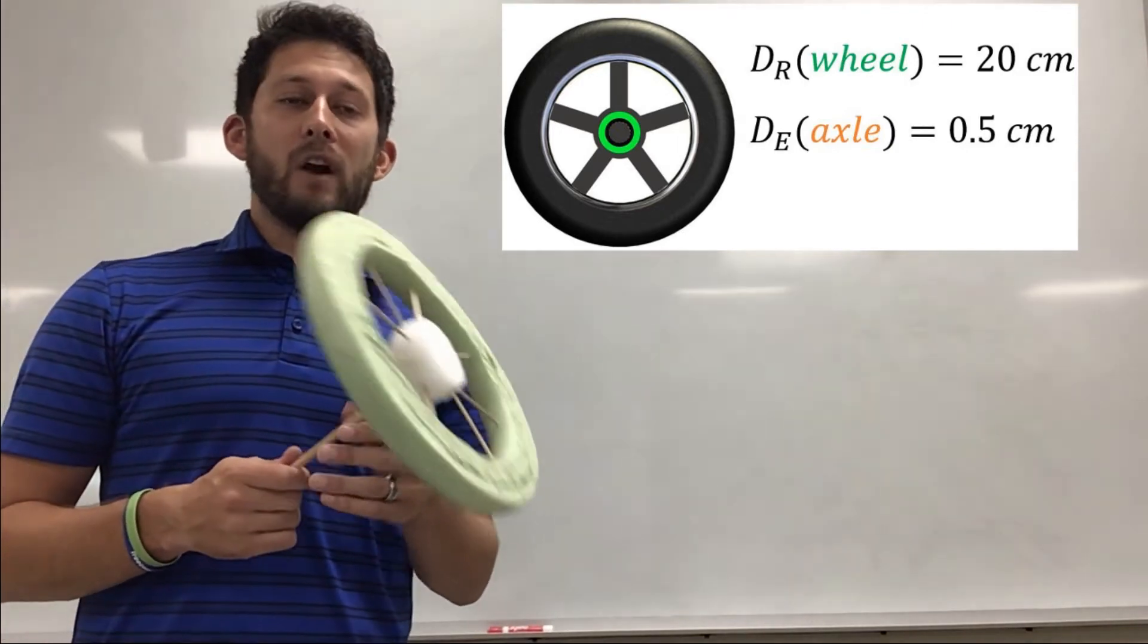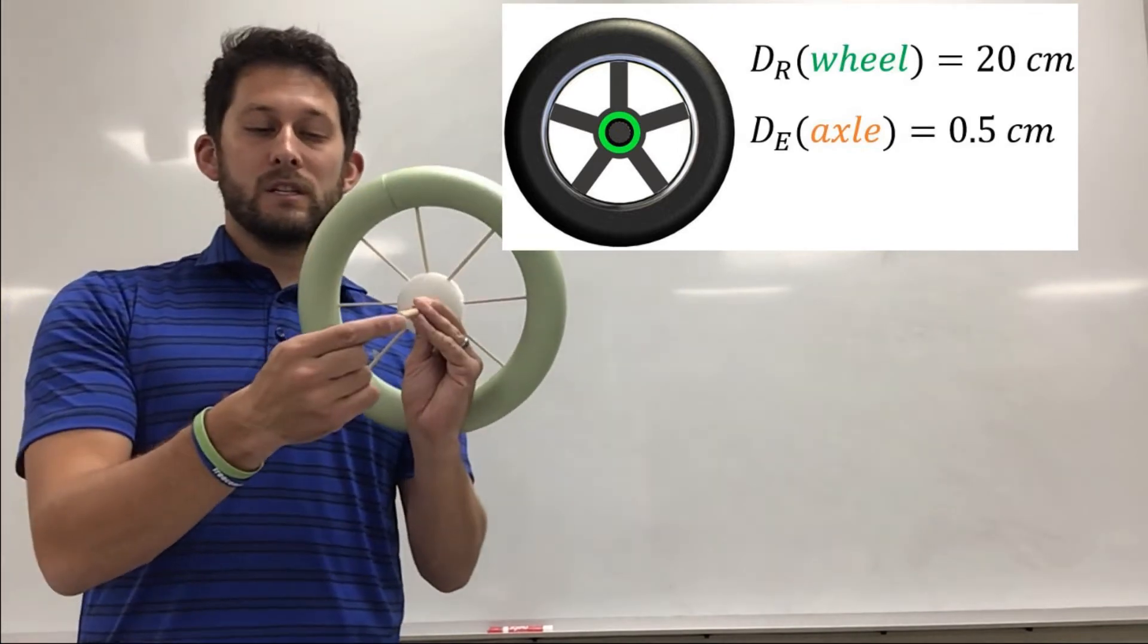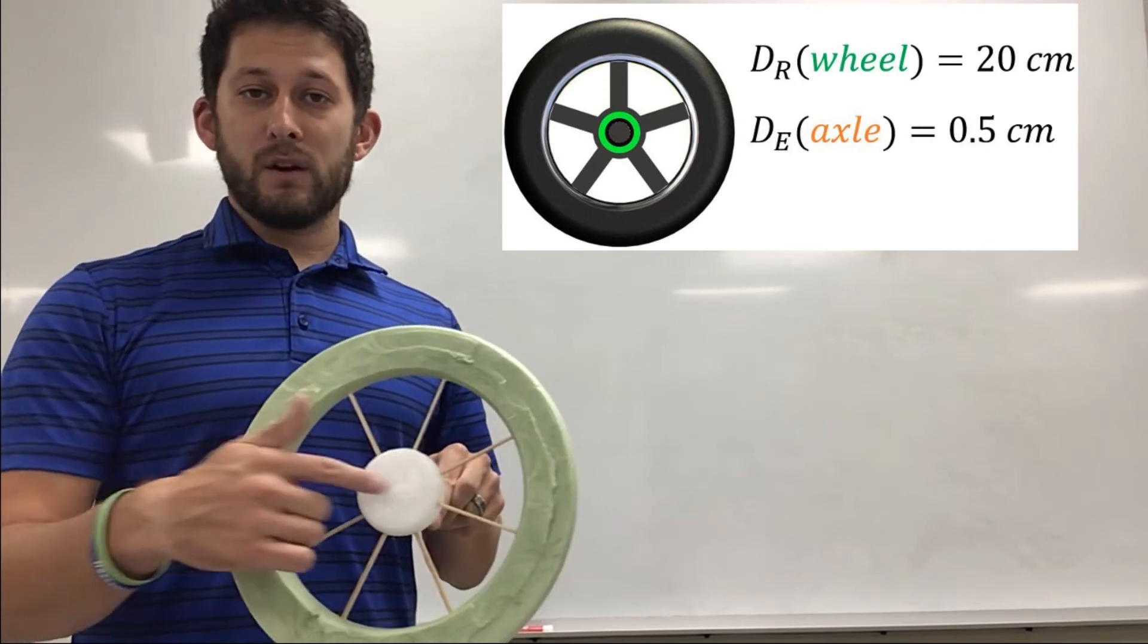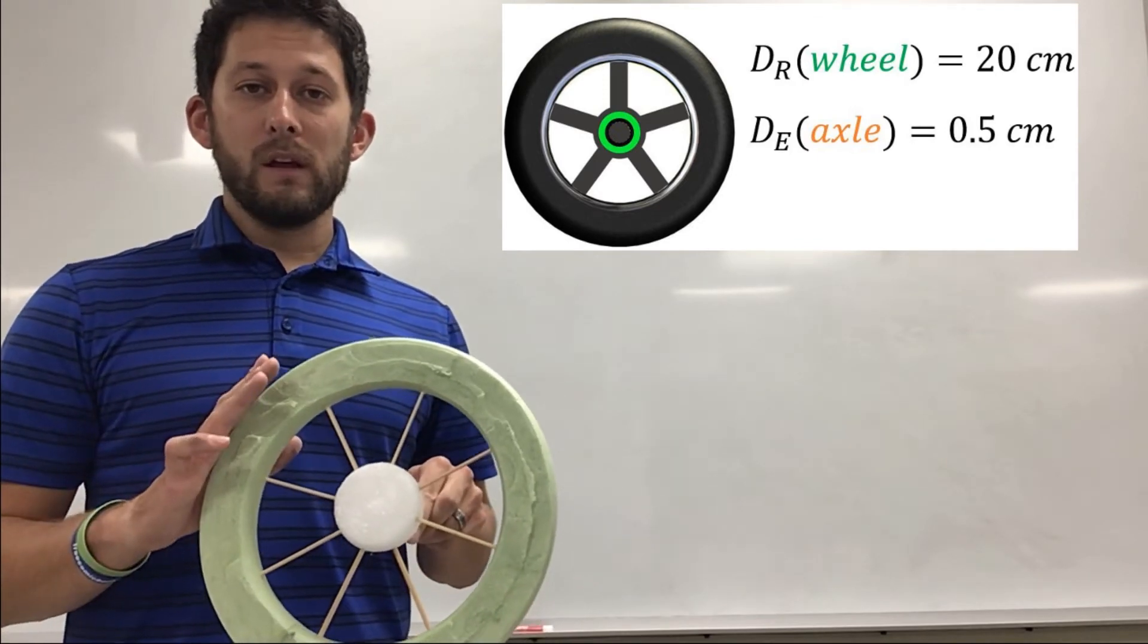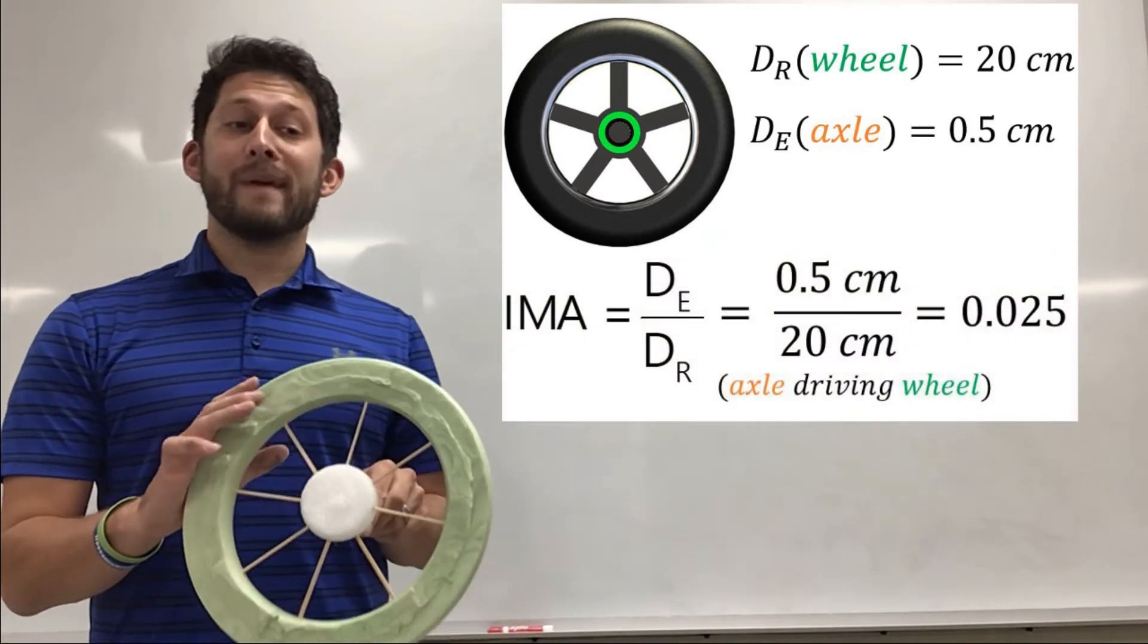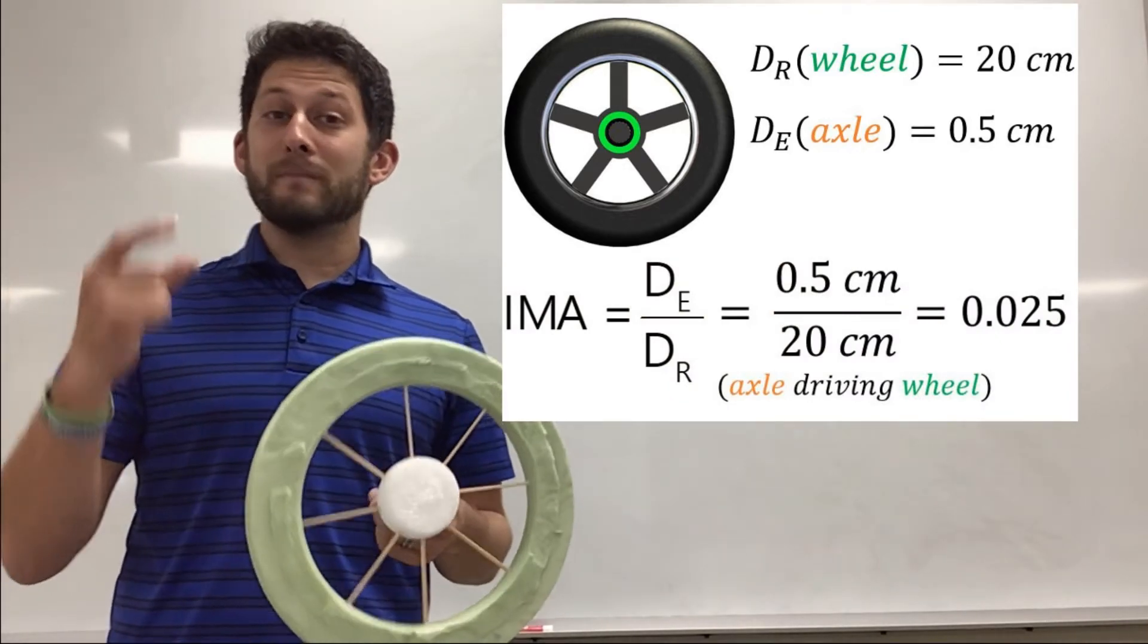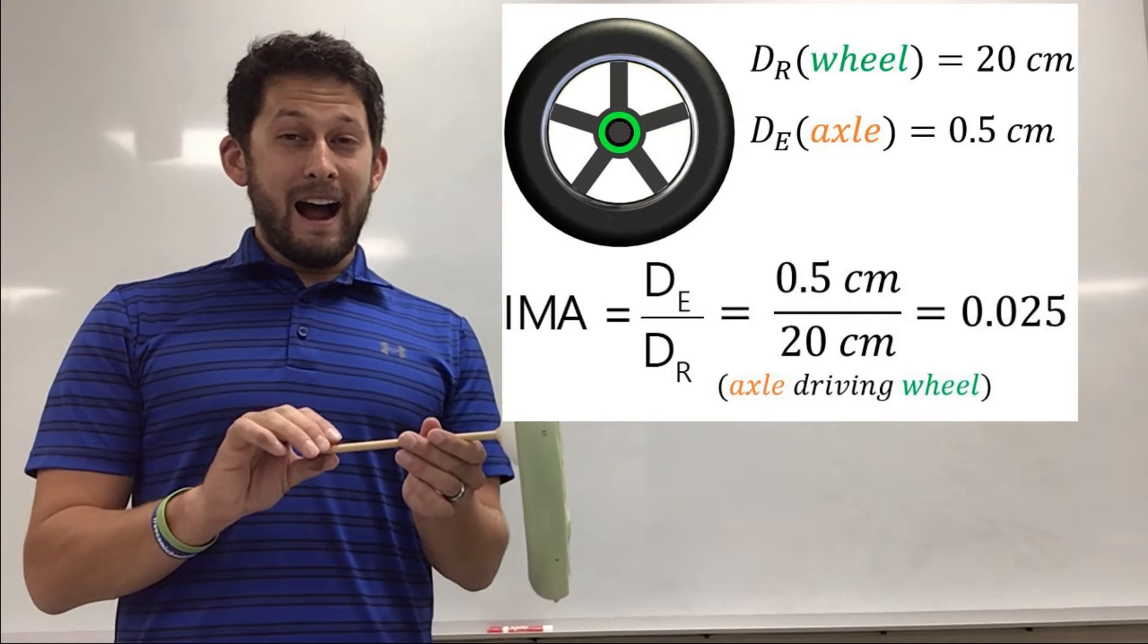So if we have our effort distance which is 0.5 centimeters for our axle, our resistance distance is 20 centimeters or the radius of our wheel. When we divide that out we find our IMA is 0.025 which is really really small.